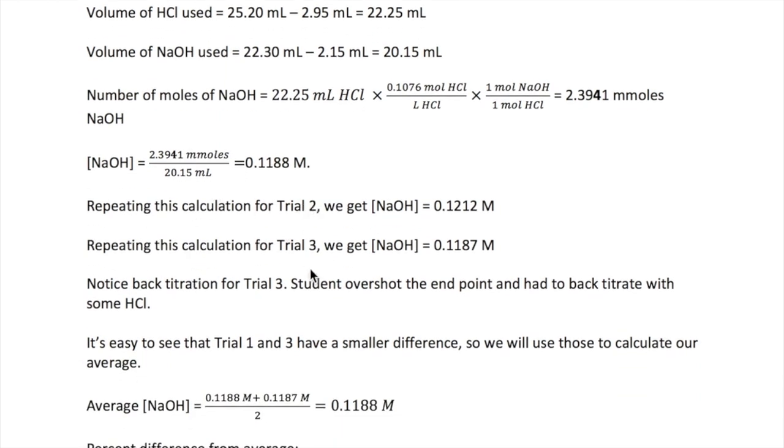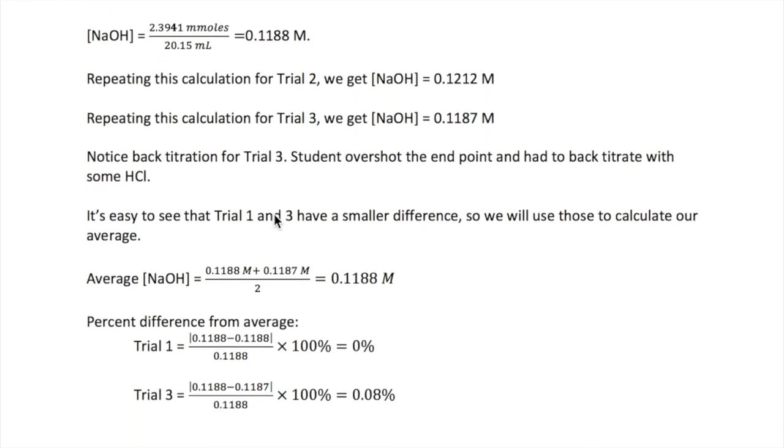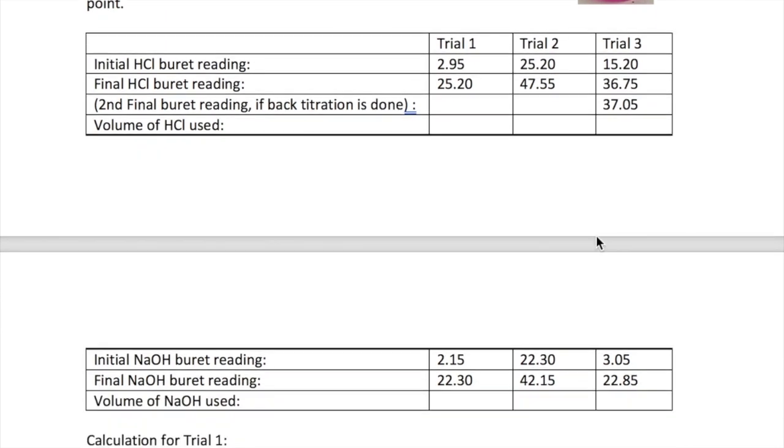If I repeat these steps for trial two and three, I would get 0.1212 and 0.1187 molar for two and three respectively. Now, I want to remind you again that there is a back titration for trial three. In terms of calculation, this will not be too complicated. You will take the second final reading of your HCl, which is this number right here, to be your final volume. And that's all.